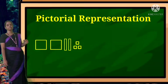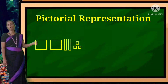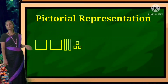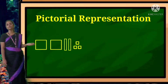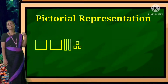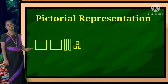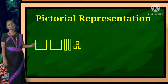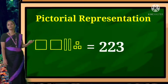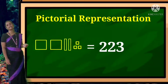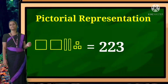Now the third example. I have drawn two big boxes, two tens boxes, and three small boxes. So: two hundred, twenty, three — two hundred and twenty-three. You have to write 2, 2, 3. These are the examples for pictorial representation.